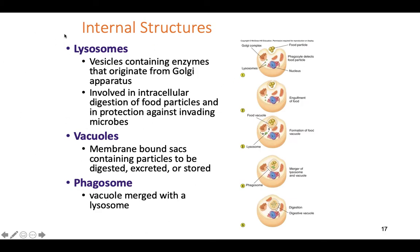Other things found inside cells include lysosomes — small balls of plasma membrane containing digestive enzymes, used like water balloons by white blood cells to kill bacteria. Vacuoles are found inside cells and used to store food, nutrients, waste products, and water — coming as food vacuoles, waste vacuoles, and water vacuoles. Then you have a phagosome, which is a vacuole that's been merged with a lysosome, digesting the stuff inside for cellular energy.